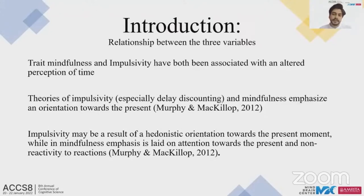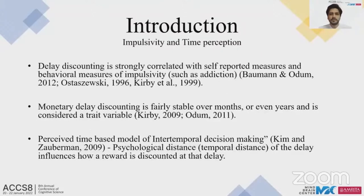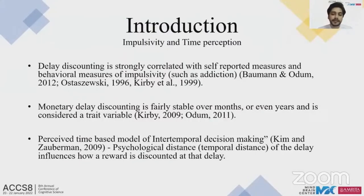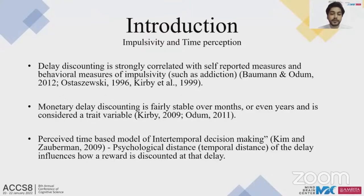However, impulsivity may result from a hedonistic orientation towards the present, while mindfulness emphasizes attention to the present with non-reactivity to experience. Despite the theoretical link between time perception, mindfulness, and impulsivity, these three factors had not been studied simultaneously. Monetary delay discounting is strongly correlated with self-report measures of impulsivity and behaviors associated with it, is fairly stable over many months, and has been called a trait variable, making it a good proxy for studying impulsive decision-making.